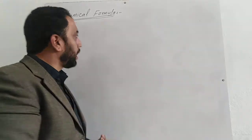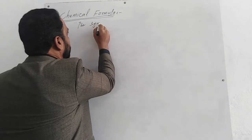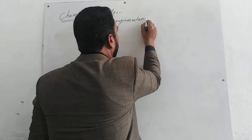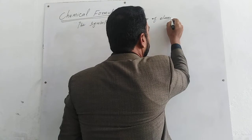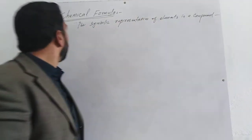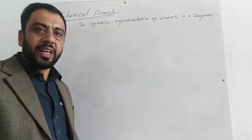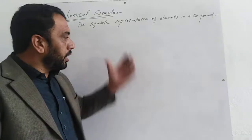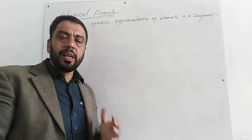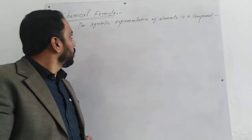Bismillahirrahmanirrahim. Today we are going to discuss chemical formula and its types. The symbolic representation of elements in a compound is called chemical formula. A collection of different symbols present in a compound is called chemical formula.